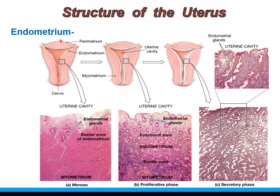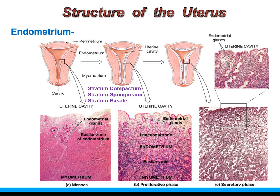The endometrium is the inner mucosal layer of the uterine wall, lined by simple columnar epithelium. It undergoes changes during different phases of the menstrual cycle. Histologically it shows three zones from the luminal surface to the myometrium: stratum compactum, stratum spongiosum, and stratum basale. The inner two layers — stratum compactum and stratum spongiosum — together form the functional layer of the endometrium, as they are shed during the menstrual phase. In subsequent phases, the stratum basale proliferates to restore the thickness of the endometrium.